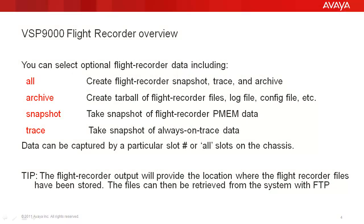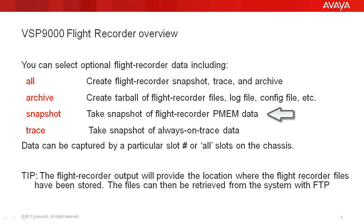There are four options that allow you to collect specific types of data when using the flight recorder. The All command is the most complete of the options, gathering persistent memory, trace data, and creates an entire archive in the form of a tarball for easy export. The Archive command will create a tarball of existing files created. The Snapshot command will capture persistent memory data. And finally, the Trace command will gather always-on trace data.